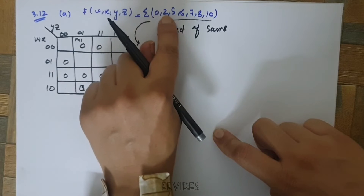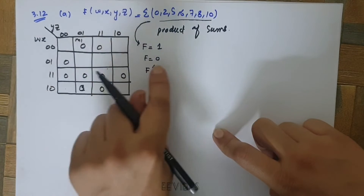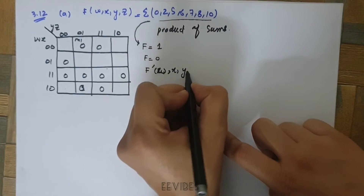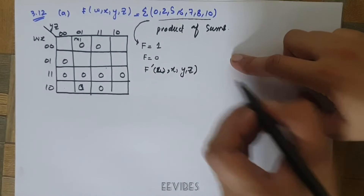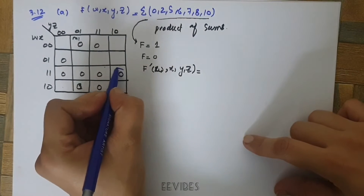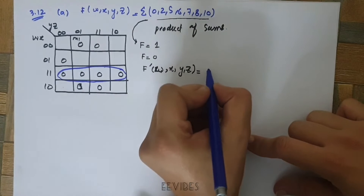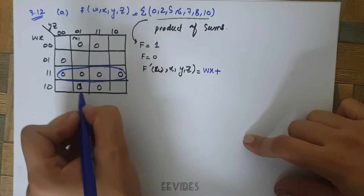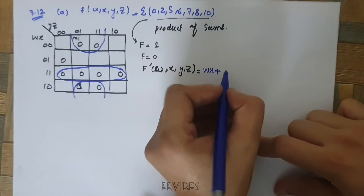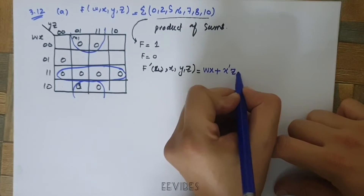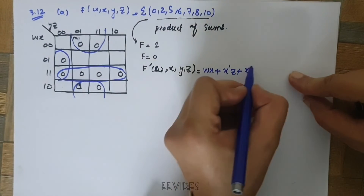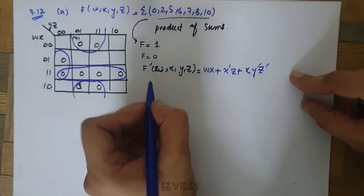Since F represents the value of the function equal to 1, the zeros represent the complemented form of the function. So the complement of F(w, x, y, z) will be written as the summation of minterms. Four adjacent squares combined give us wx, then plus combining those four adjacent squares gives x'z, then plus the remaining zero gives x y'z'.